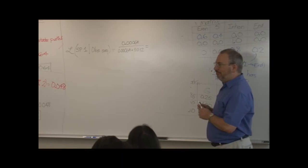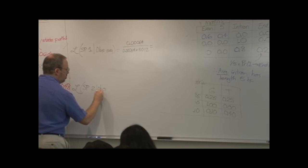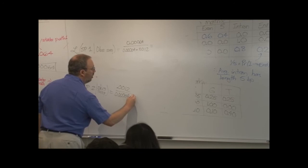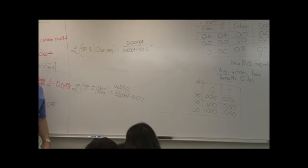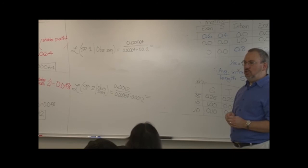So now that we've averted catastrophe, someone, if someone will kindly work on that, meanwhile, I'll set up the other one, the likelihood of state path 2 given the observed sequence, which of course will just be 0.0012 divided by this sum. And do we have someone who's calculated this top one?